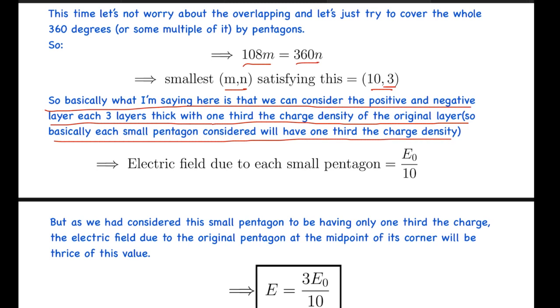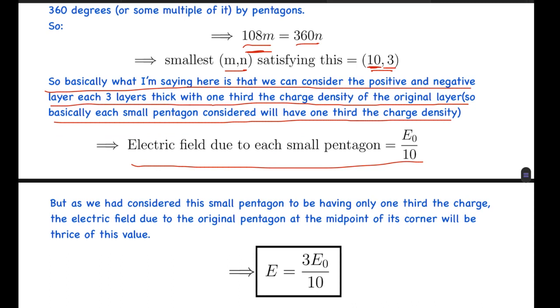Basically, each small pentagon considered will have one-third the charge density. This is also one way to think of it. Now, as there are 10 pentagons involved, and 108 times 10 is equal to 360 times 3, the electric field due to each small pentagon will be E₀/10, because the electric field there was E₀ and there are 10 equivalent pentagons. But as we had considered this small pentagon to be only having one-third the